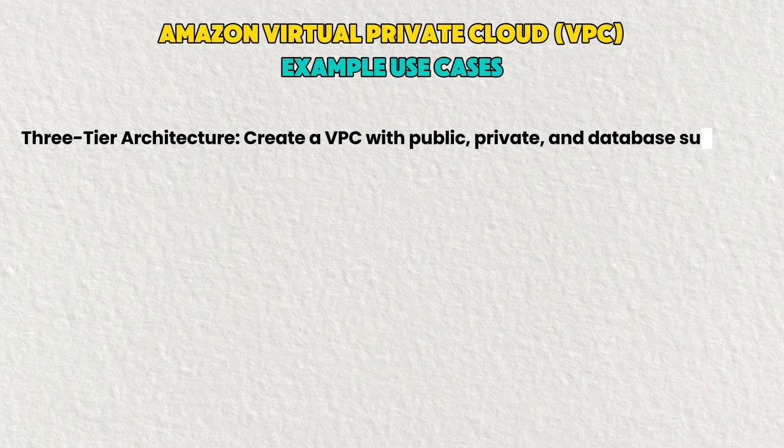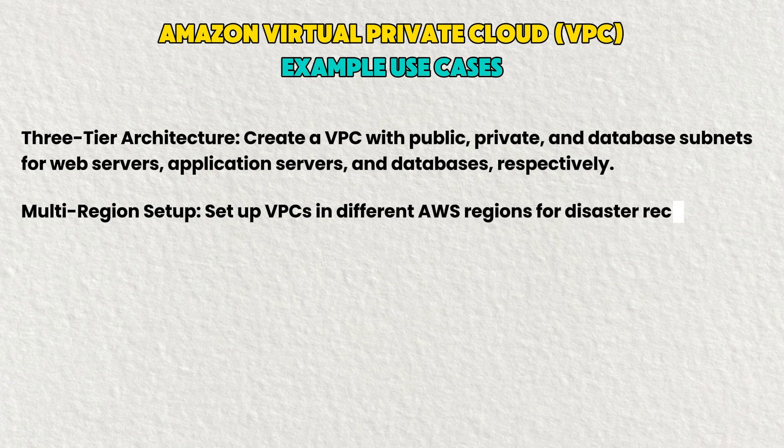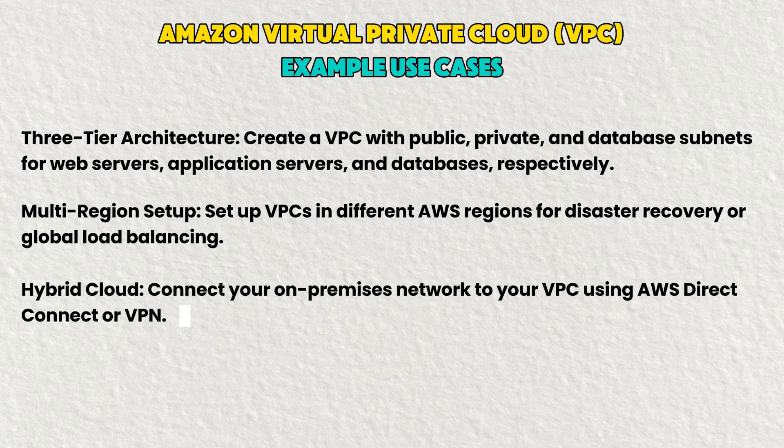Three key VPC use cases: first, create a VPC with public, private, and database subnets for web services, application servers, or databases. Second, multi-region setup — configure VPCs in different AWS regions for disaster recovery or global load balancing. Third, hybrid cloud — connect your on-premises network to your VPC using AWS Direct Connect or VPN. In conclusion, Amazon VPC is a powerful tool for building secure and flexible network environments in the AWS cloud.